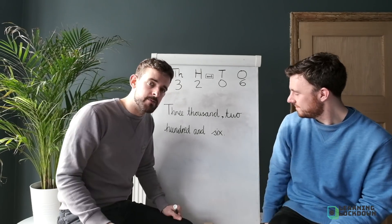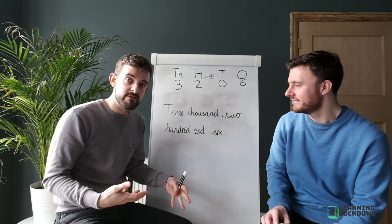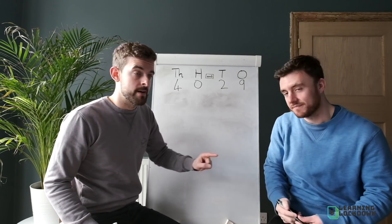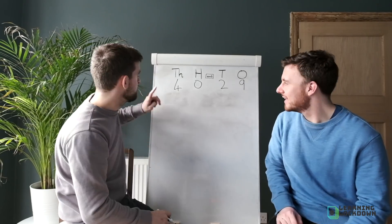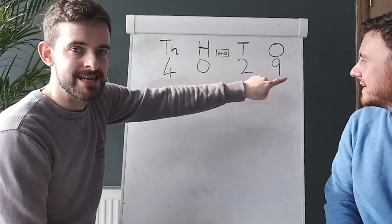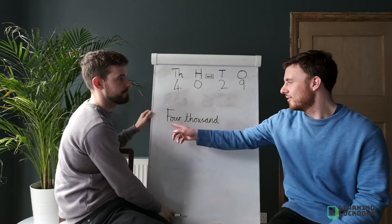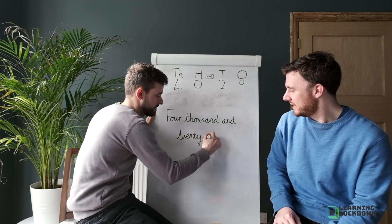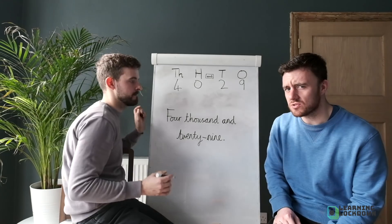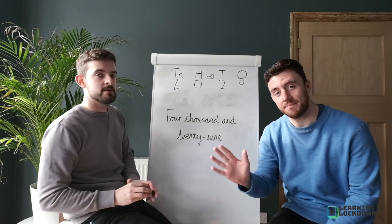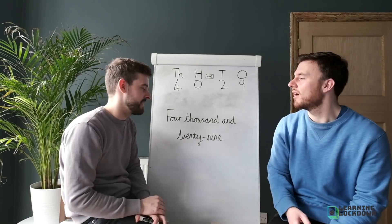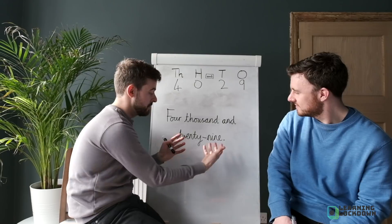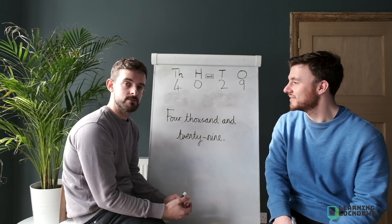Let's try one more, year three. We've got another placeholder — don't say the zero — write what you say. We say: four thousand and twenty-nine. Writing it: Four thousand — no comma needed because we're going straight into the last part — and twenty-nine. Mr A has drawn a hyphen between the tens and ones. The hyphen shows that twenty and nine join together to make 29, showing they're one number.